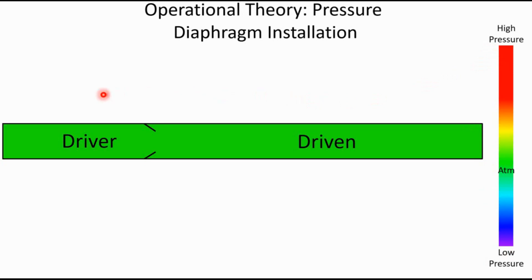So we start our diagram here with the assumption that we just ran a test and allowed the driver and driven section to exhaust back to atmosphere. So we have a broken diaphragm here. The driver and driven section are currently connected and they're at atmospheric pressure. So the first thing that we need to do is install our diaphragm again. So we open up the tube, put in a sacrificial diaphragm, and close it back up.